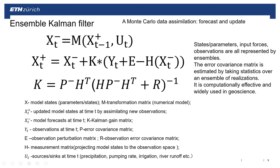A key advantage of the Ensemble Kalman Filter is that we don't use the explicit way to calculate the error covariance matrix. Instead we use the ensemble of realizations to compute it statistically — using the statistics of the ensemble to represent the original statistics of the whole population. This makes the computation much faster.